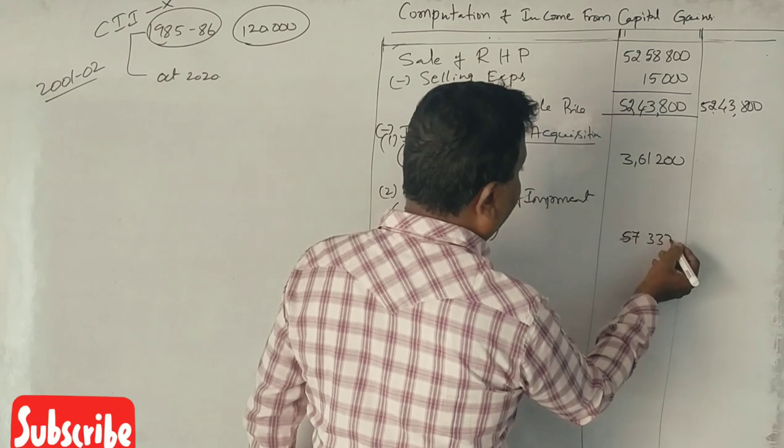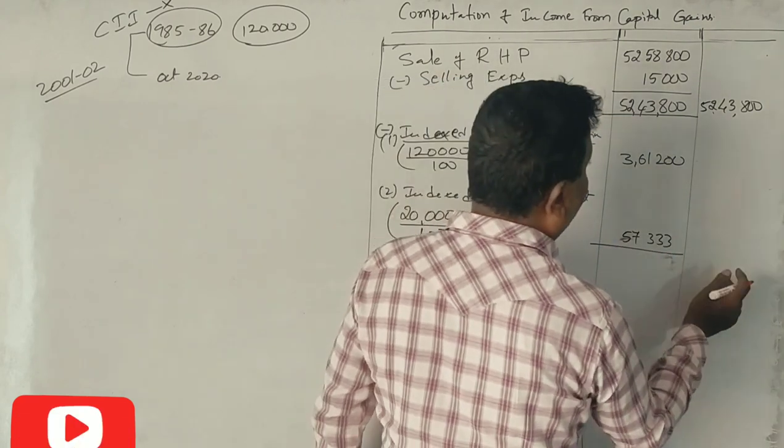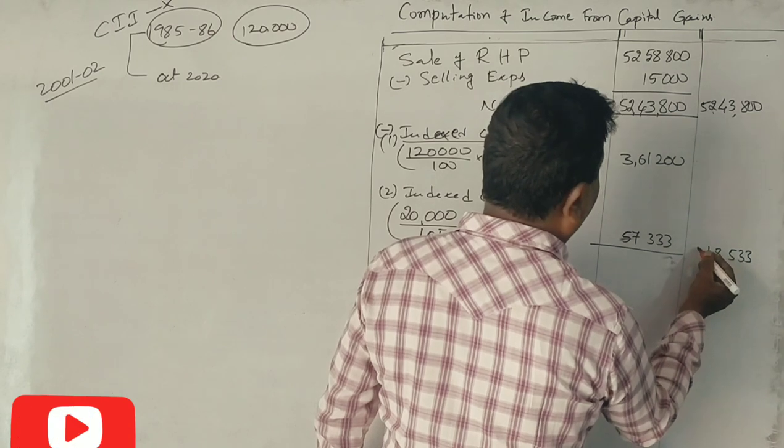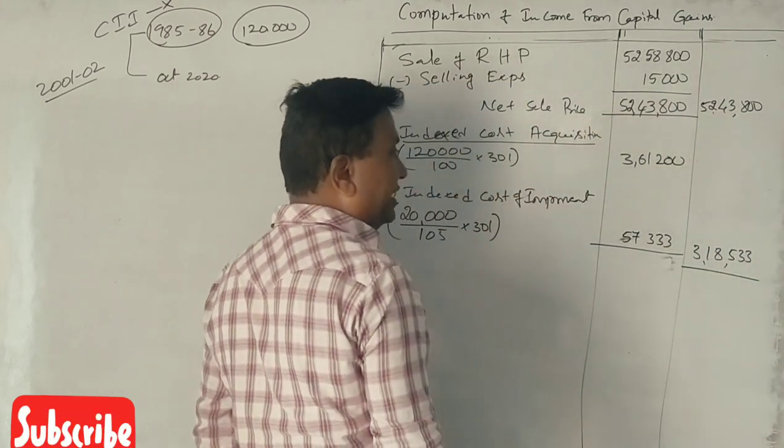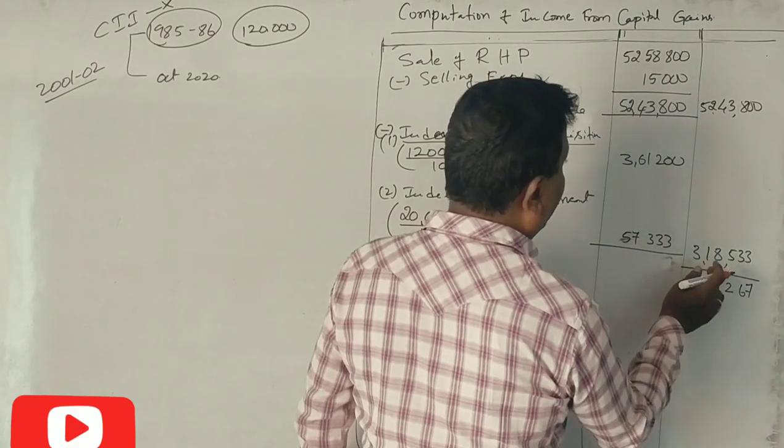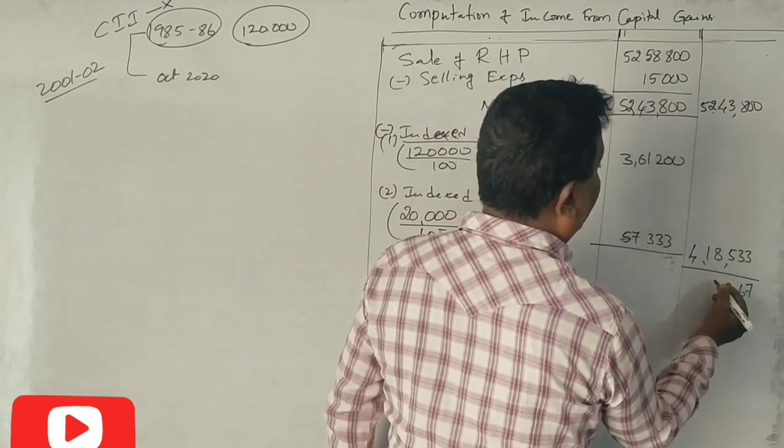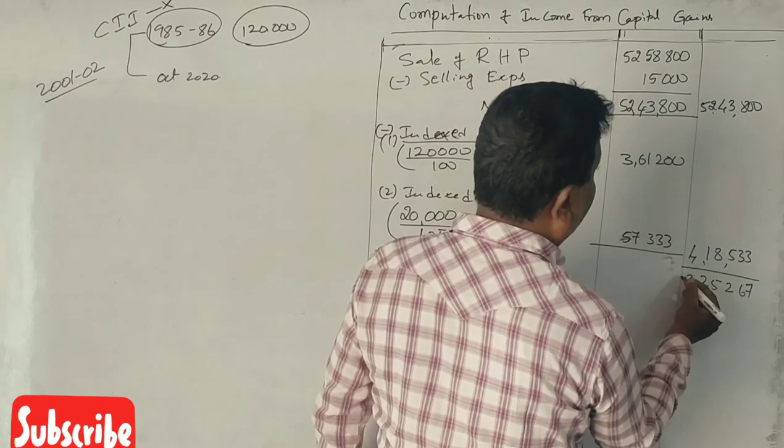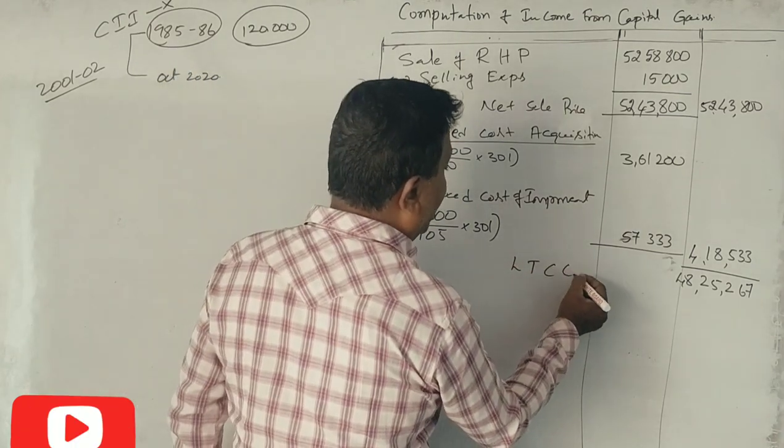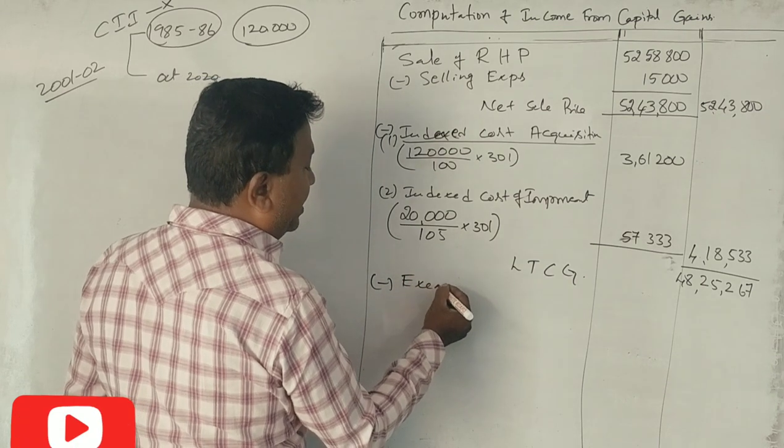Rs. 3,61,200 plus Rs. 57,333 equals Rs. 4,18,533. Rs. 52,43,800 minus Rs. 4,18,533 gives Rs. 48,25,267 as long term capital gain.